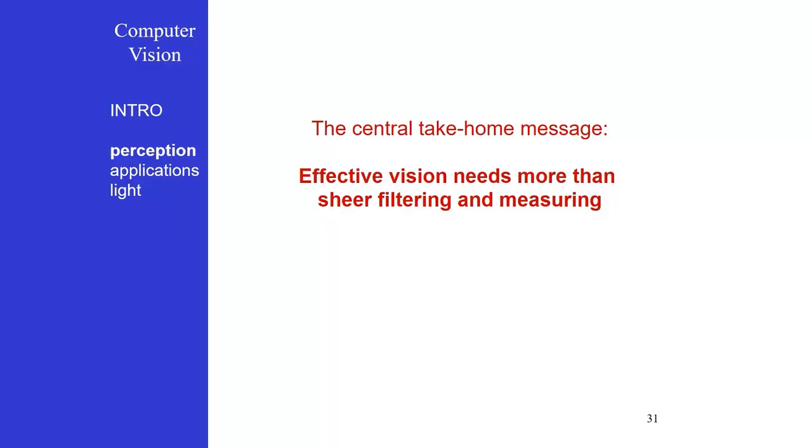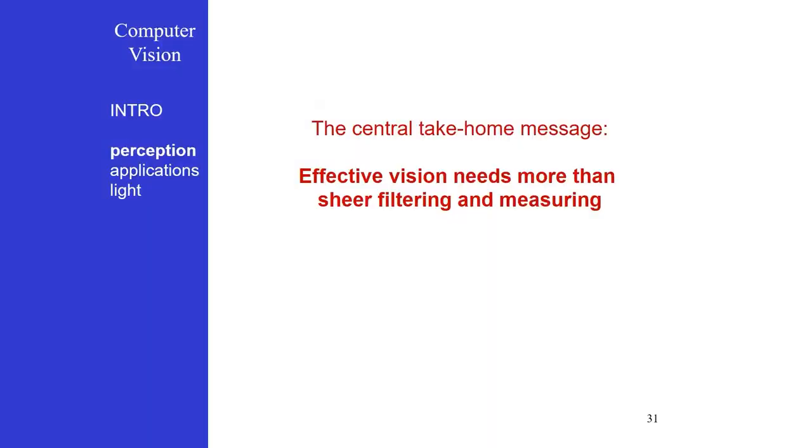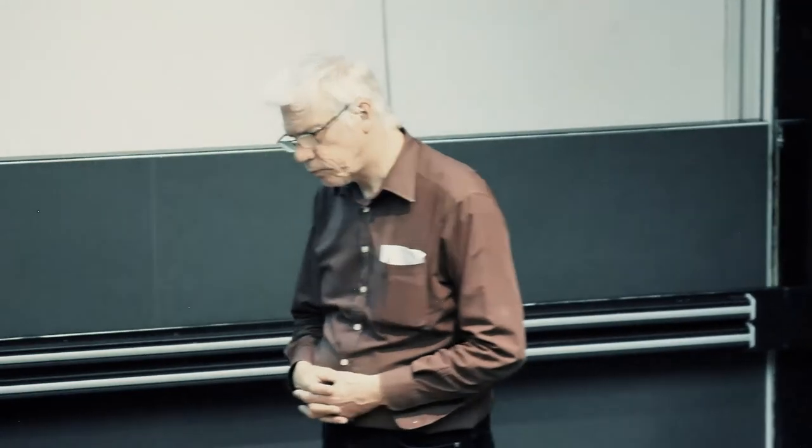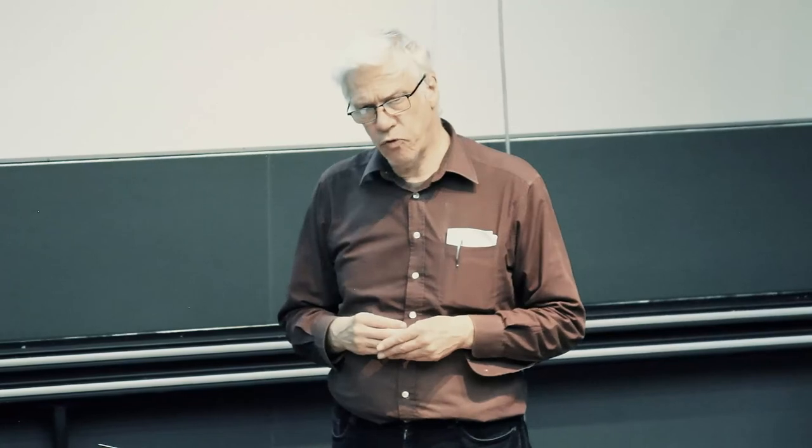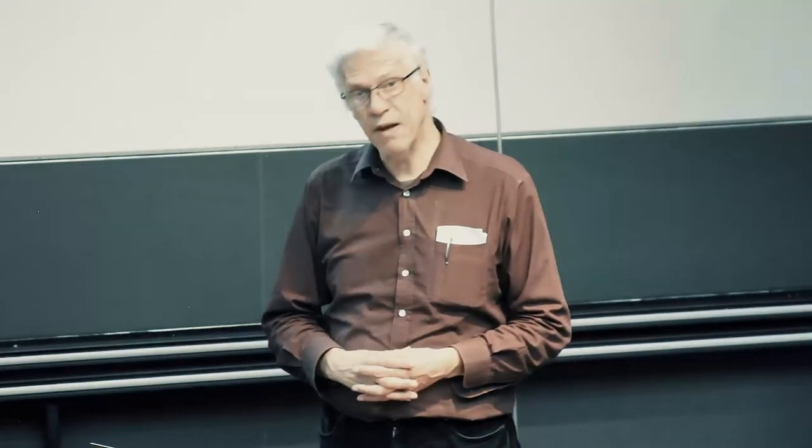So the central take-home message of this part is that effective vision needs more than sheer filtering and measuring. Successful vision is not just a mere bottom-up process, a sequence of filtering operations. Expectations feed into this. Humans know about the world. Their expectations influence their interpretation of images. And information is gathered from all around the image, even when it comes to very local decisions about what is being found there.